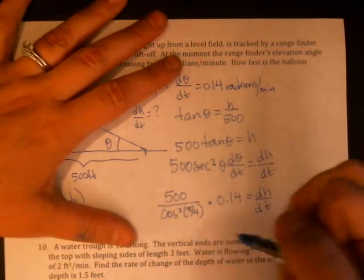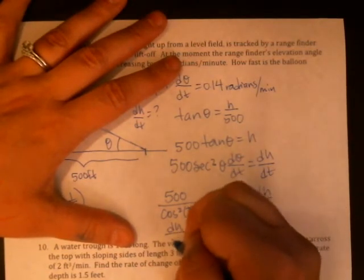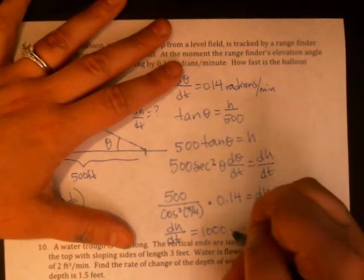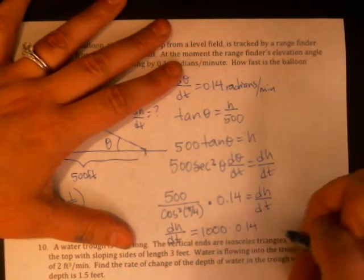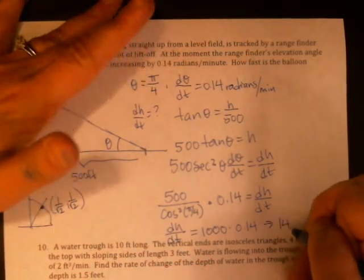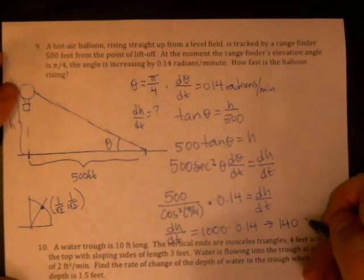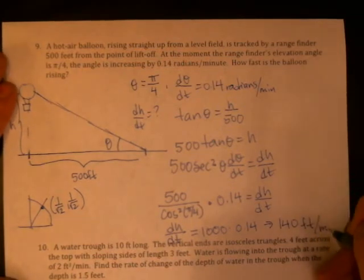Dividing by 1 half is the same as multiplying by 2. So we actually have 1,000 times 0.14, which means we're going to get 140, and that's the height. So that should be in feet per minute.